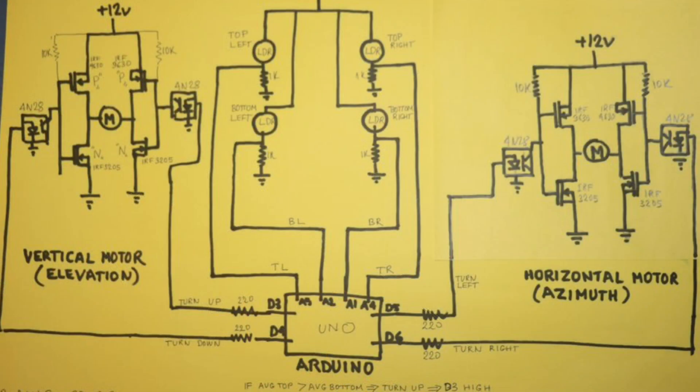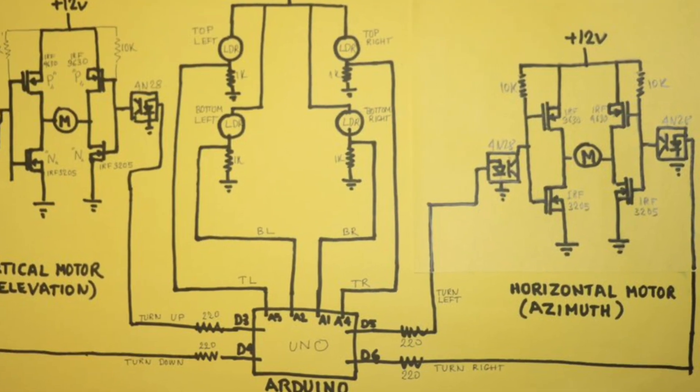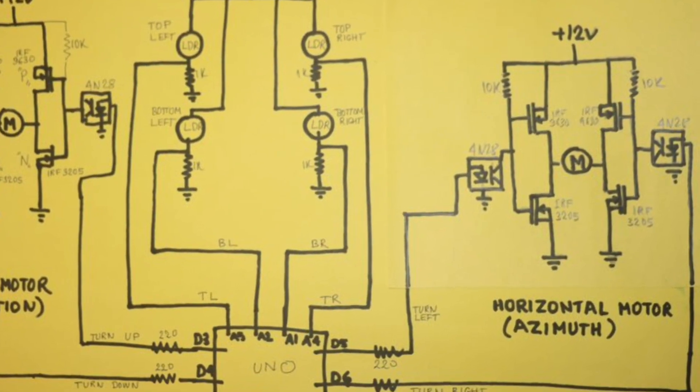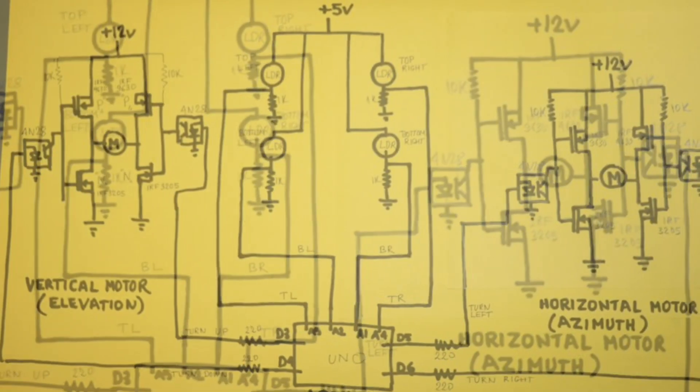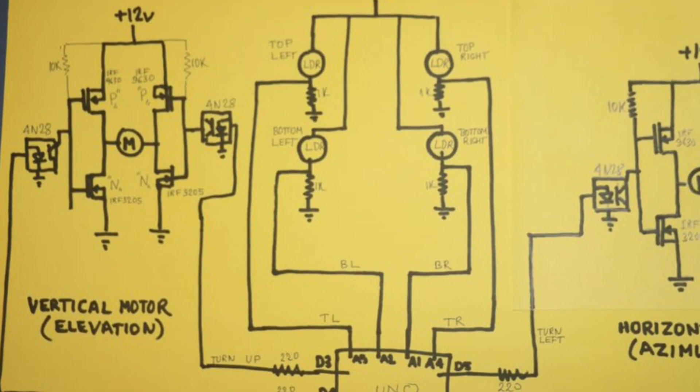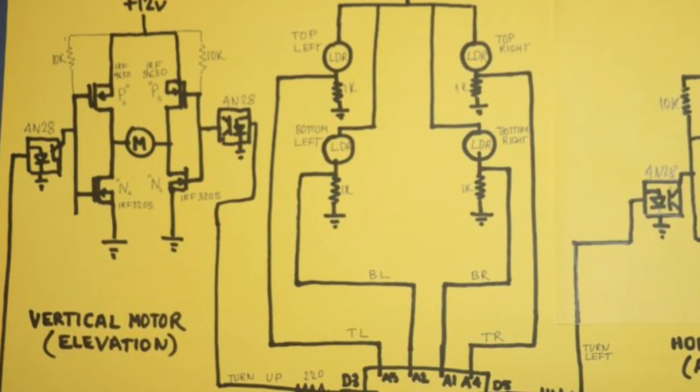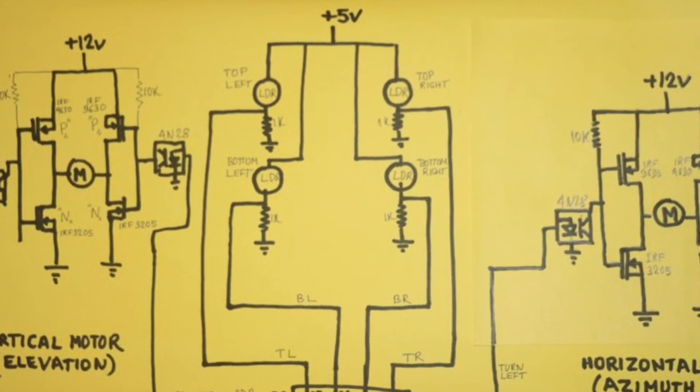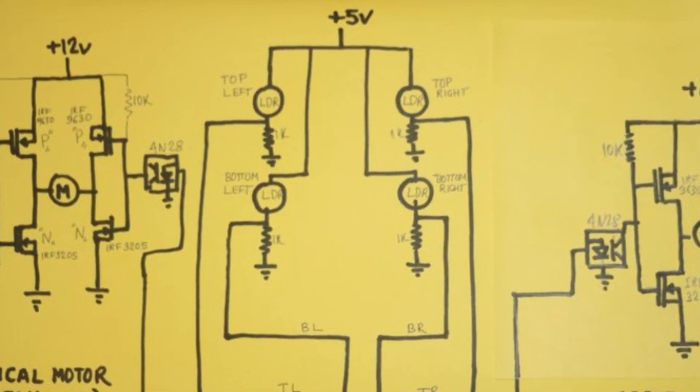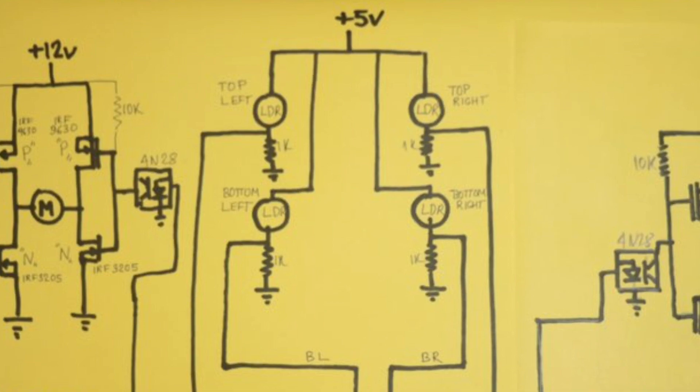Here is the circuit diagram. On the right side you see the azimuth control motor and H-bridge MOSFETs: two N-types and two P-types. On the left side you see the elevation control motor and MOSFETs. Middle top you see the four LDR light-dependent resistors for the left-right and top-bottom sensing.